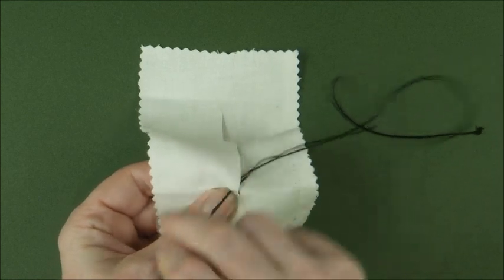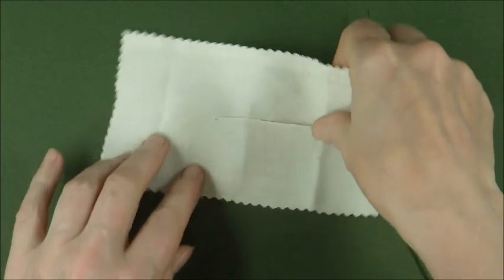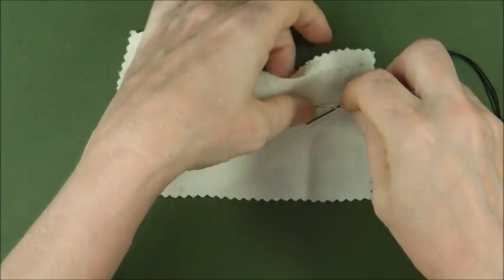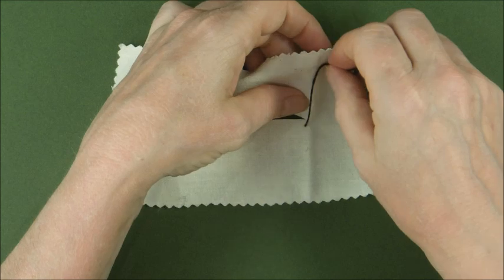We go in through the gap there and then we're going to create the first rung of our ladder by going directly opposite on the other side of the opening.